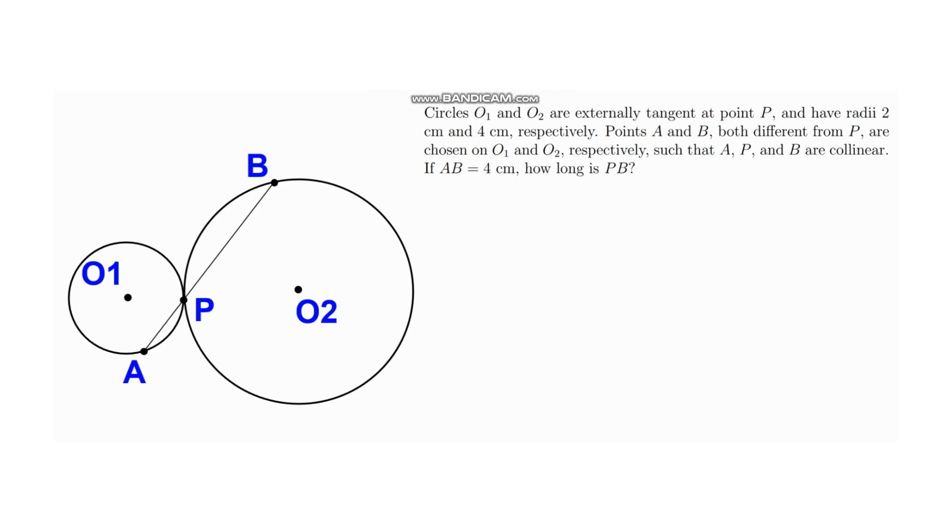Okay, so first thing that we have to do is we have to label the lengths of this figure. It says that the radii of the circles are 4 cm and 2 cm respectively. So a point on circle 1 from the center we have 2, and another point A to the center we have 2.